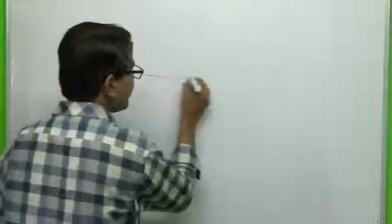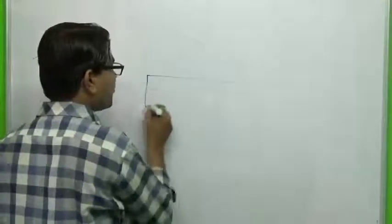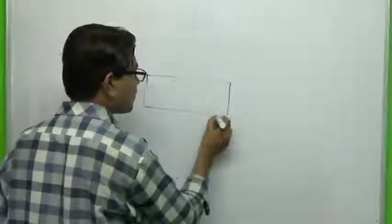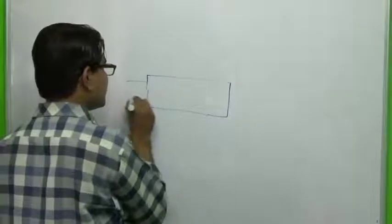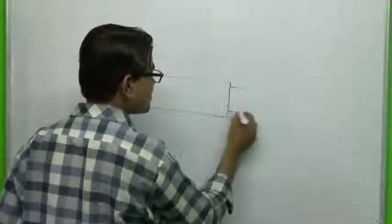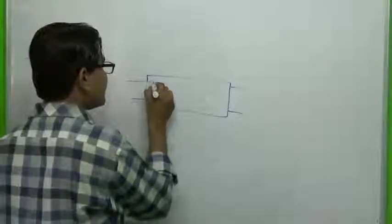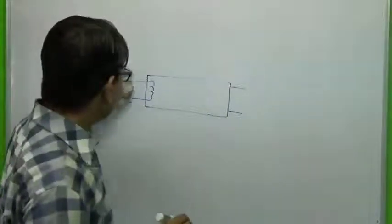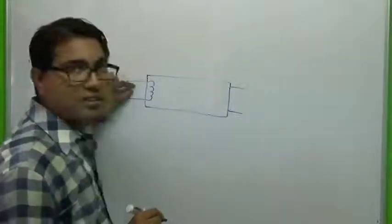In our fluorescent tube, we have four terminals. Inside this tube, a filament is connected to both these terminals.